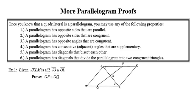Once a quadrilateral is a parallelogram, both pairs of its opposite sides must be parallel. Both pairs of its opposite sides must be congruent. Both pairs of its opposite angles must be congruent. Consecutive or adjacent angles are supplementary. The diagonals bisect each other, and the diagonals divide that parallelogram into two congruent triangles.